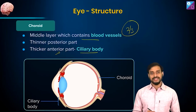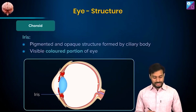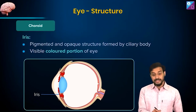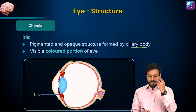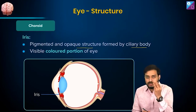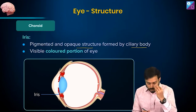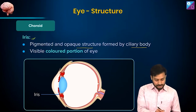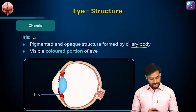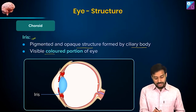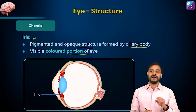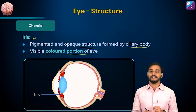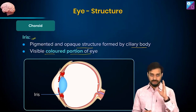Now let's talk about the iris. The iris is a pigmented opaque structure found at the ciliary body. The ciliary body continues farther over to form a pigmented opaque structure which is the iris. This is actually the visible colored portion of the eye — the color that you see is basically the color of the iris.